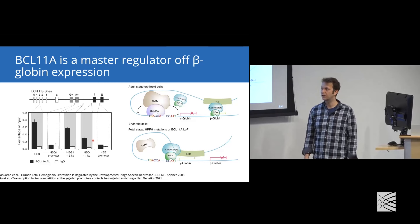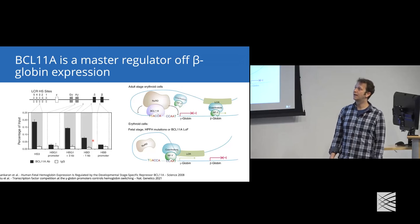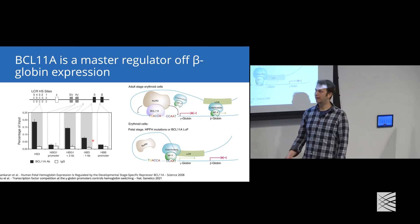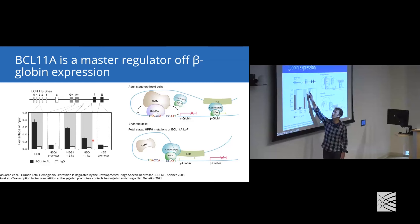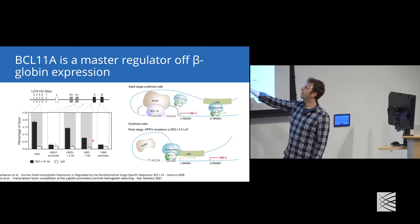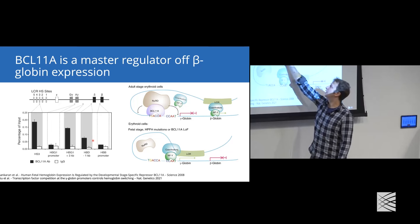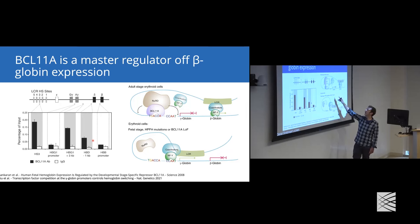Genome-wide association studies showed that there's a locus enriched in people with high fetal hemoglobin expression which maps to BCL11A. So what is BCL11A? BCL11A is a master regulator of globin expression. It has been shown early on that if we look at the beta-globin locus in humans and perform ChIP-seq experiments or qPCR experiments for BCL11A, we can see that it binds specifically to multiple regions in the beta-globin locus.